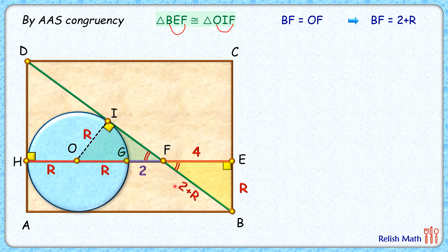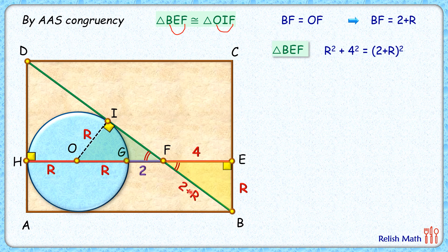In this yellow triangle, applying Pythagorean theorem, we'll get r squared plus 4 squared is 2 plus r squared.